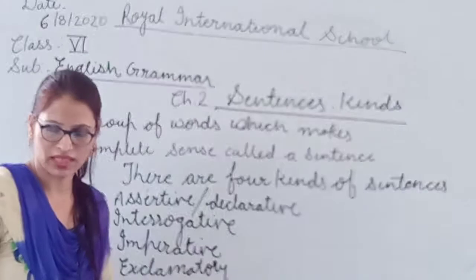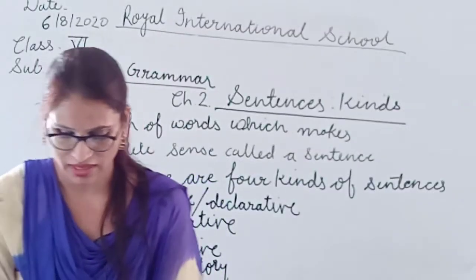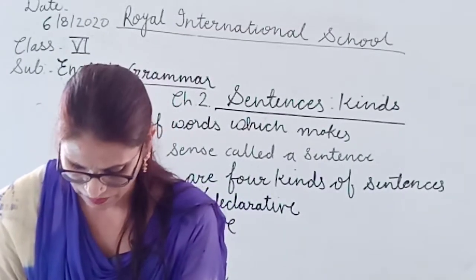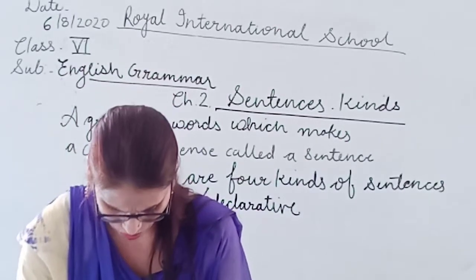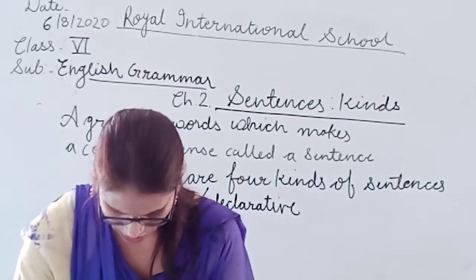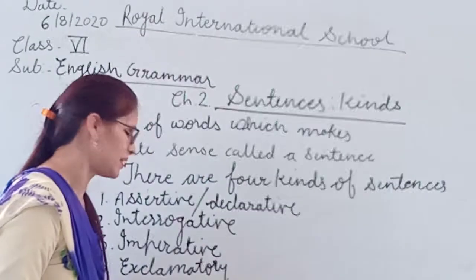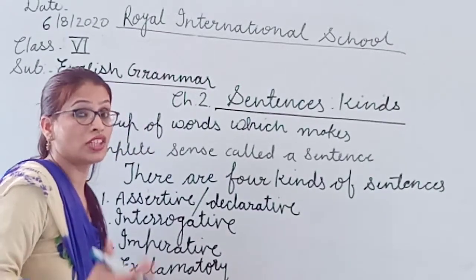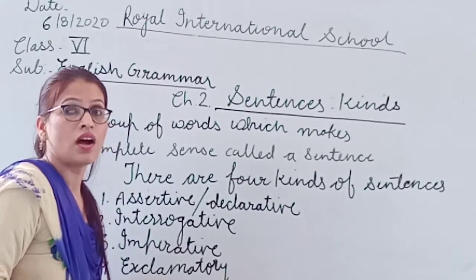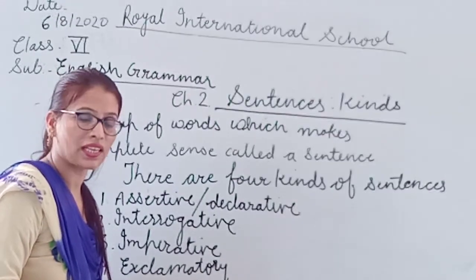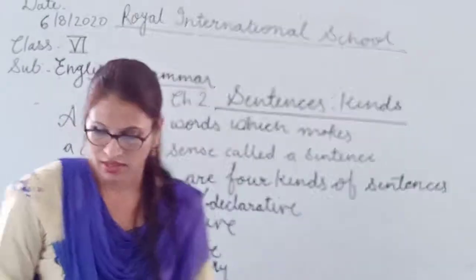Exclamatory sentences are those where we express strong feelings or sudden emotion - like when we suddenly feel something and say 'ouch' or 'oh.' Those kinds of sentences are called exclamatory sentences.